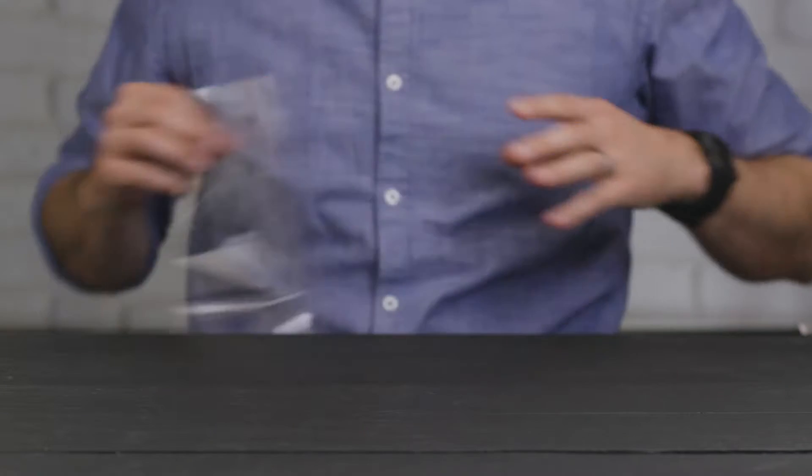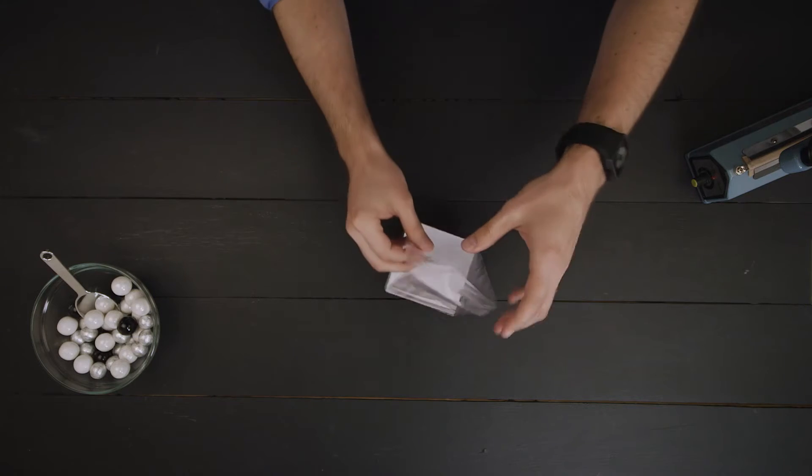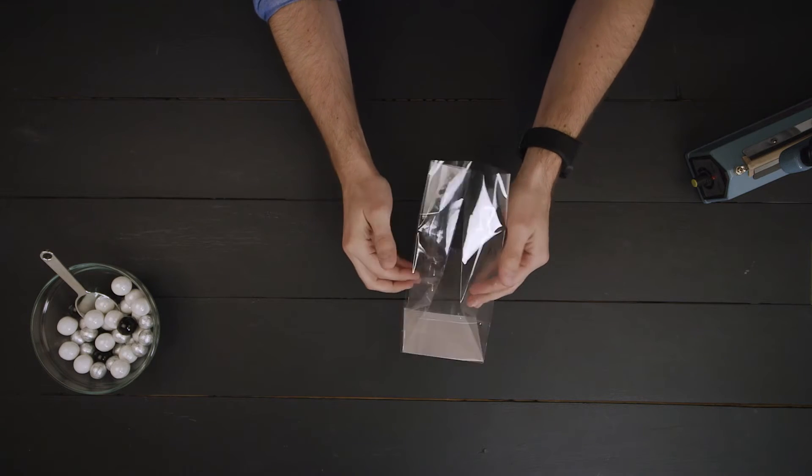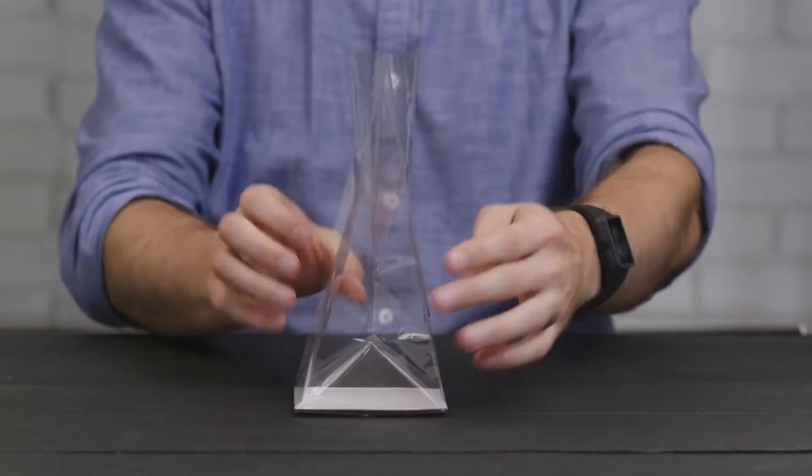We also carry a line of flat bottom gusset bags that feature a white paper insert. The white paper insert provides extra support inside the bottom of the bag.